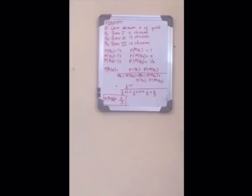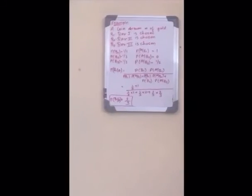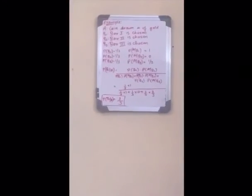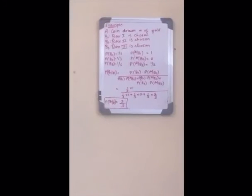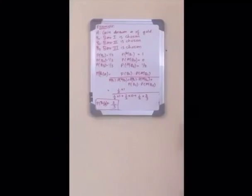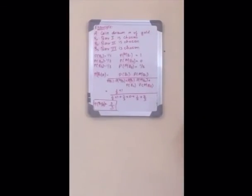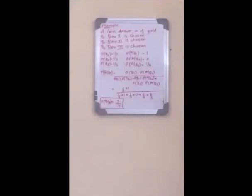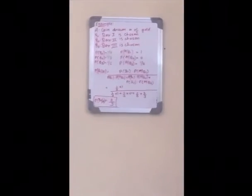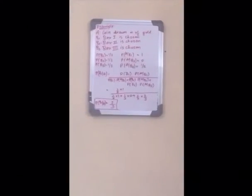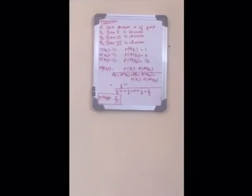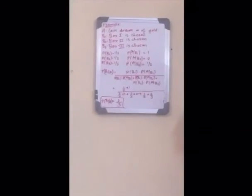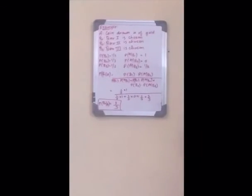Applying Bayes' theorem to the given question, the probability of event B1 given A is given by P(B1)·P(A|B1) upon P(B1)·P(A|B1) + P(B2)·P(A|B2) + P(B3)·P(A|B3). Substituting the values, the answer turns out to be 2/3.